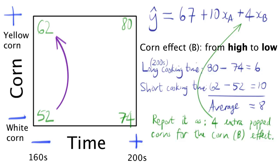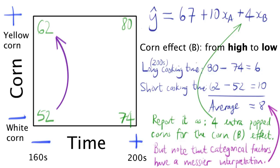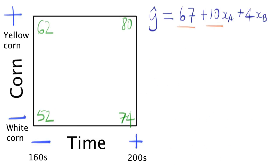Again, by convention, we report half the value. So in this case, that's a 4 unit increase. So now you can see where we got these values of 67, 10, and 4.